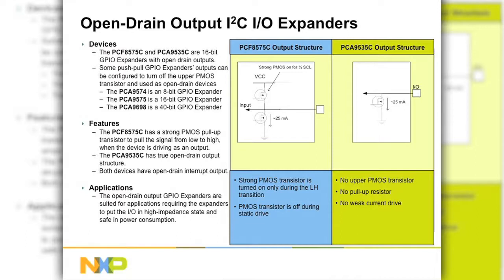The open drain devices have the additional benefit that they may be used in wired AND configurations. Further, they allow no current flow through the parasitic diodes or LEDs when operated on different power supply voltages with one supply turned off.